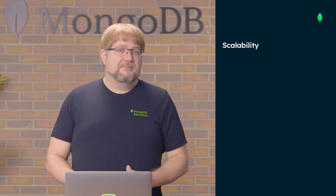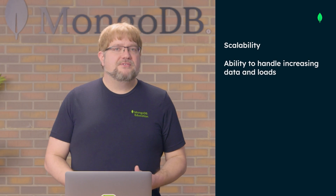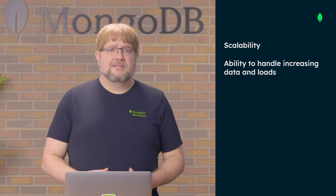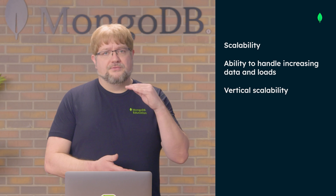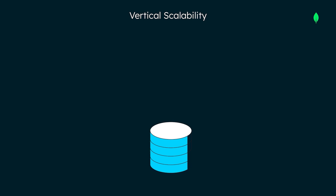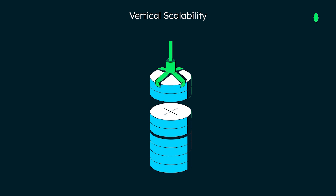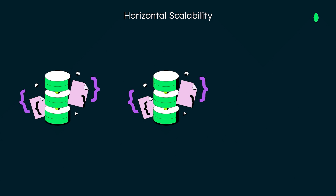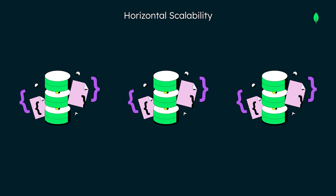We'll begin with scalability, which is the ability to efficiently handle increasing data and user loads. When we talk about scalability in MongoDB, we're referring to vertical scalability and horizontal scalability. Vertical scalability means adding more resources to a single server, including CPU, memory, and storage to meet demand. Horizontal scalability refers to spreading data across multiple servers — this is the essence of distributing load, handling vast data efficiently, and maintaining performance as the load increases.